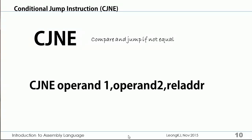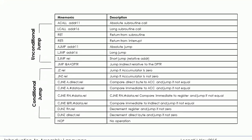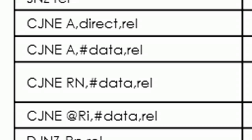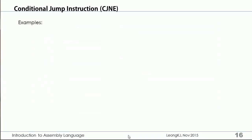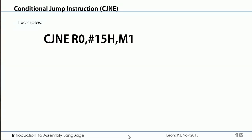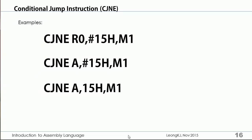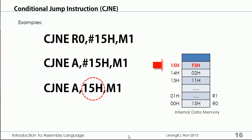This is the syntax of the CJNE instruction. The instruction compares Operand 1 and Operand 2. If they are not equal, the program jumps to the relative address specified. Examples of CJNE instructions include: compare content in Register R0 and Immediate Data 15h; compare Accumulator and Immediate Data 15h; and compare Accumulator and Direct Byte 15h, where 15h refers to the data at address 15h.